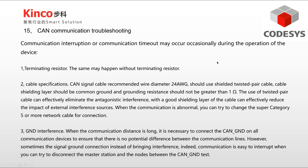Third, check the cable. It is recommended to use 24 AWG shielded twisted pair cable. Cable shielding layers should share a common ground and grounding resistance should not be greater than 1 ohm. When communication is abnormal, you can try changing to Category 5 or higher network cable for connection. Regarding GND interference — when the communication distance is long, it is necessary to connect the CAN GND on all communication devices to ensure there is no potential difference between the communication lines.